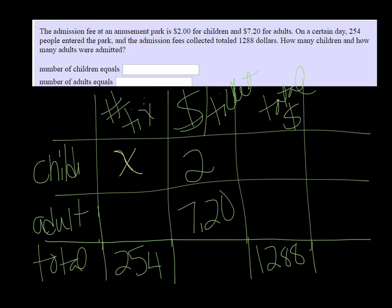Actually, I'll grab a different color. And the number of adults is going to be just subtract that from 254. So 254 minus X. So if there were 50 children, then there were 204 adults. You know, you're just going to subtract.